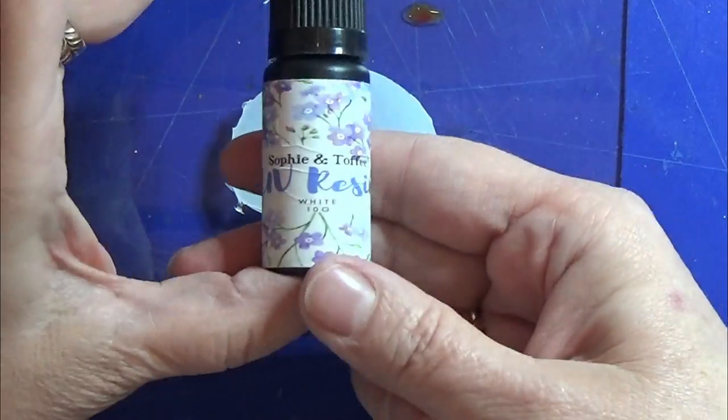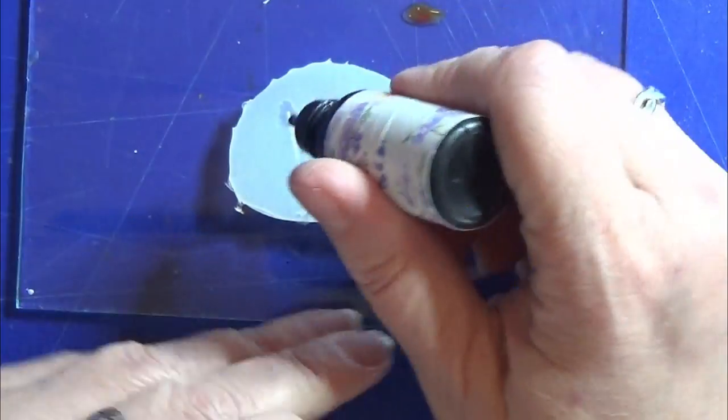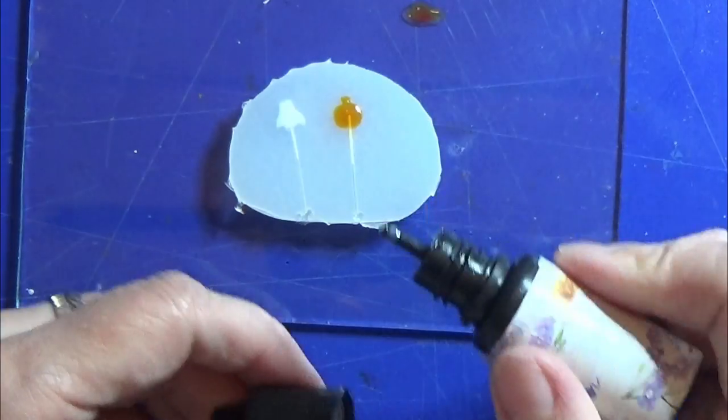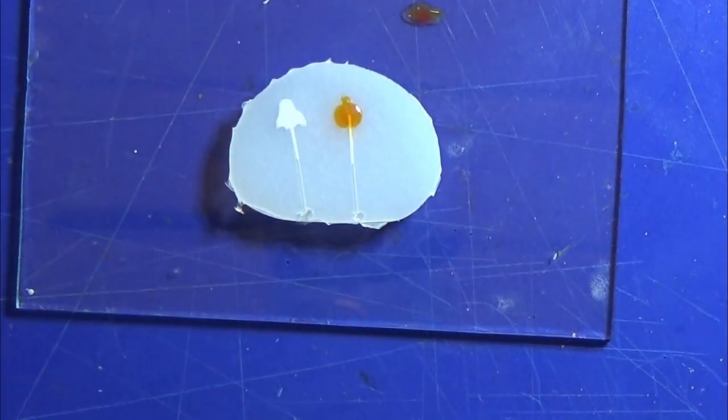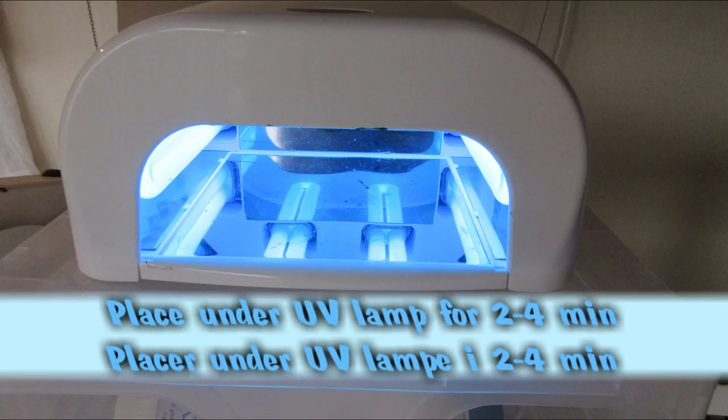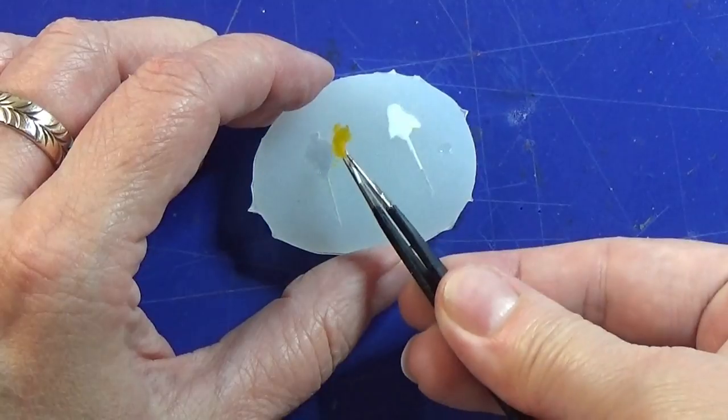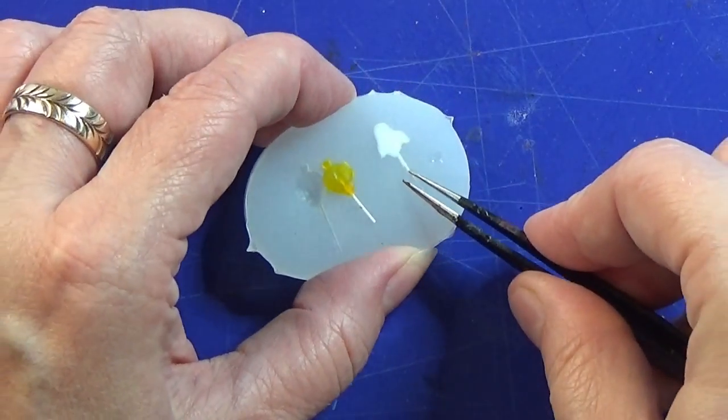For the ghost I have this white pre-made UV resin again from Sophie and Toffee so I just need to put that in there and it's perfect. Now to the UV light, take them out of the mold and you can make some more if you want to.